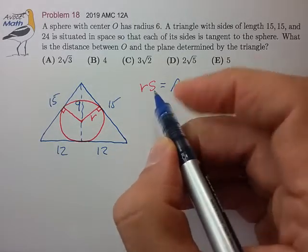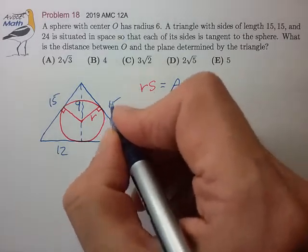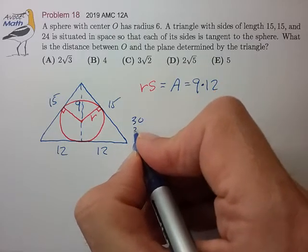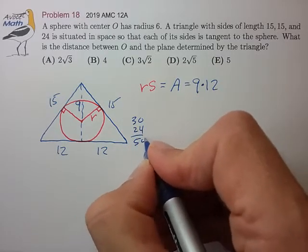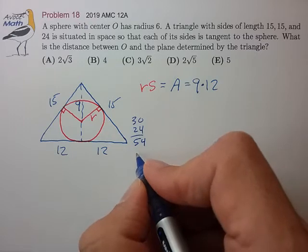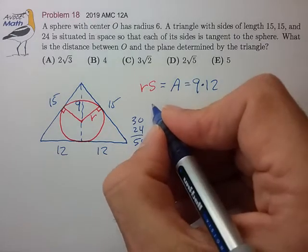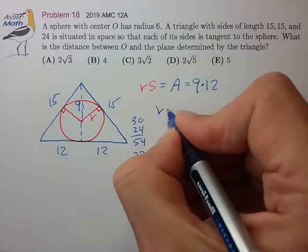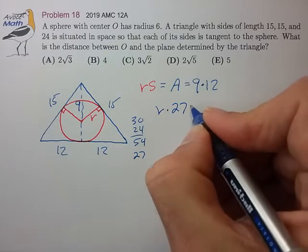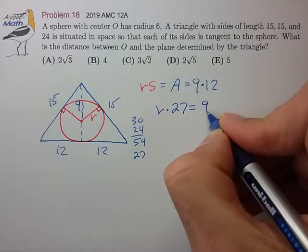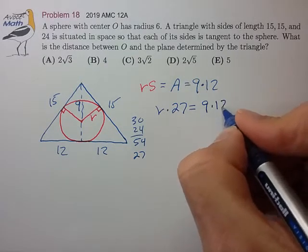Now what's the semi-perimeter? The semi-perimeter is the perimeter 30 plus 24, 54 divided by 2 is 27. So we know that the radius times 27 is equal to 9 times 12.